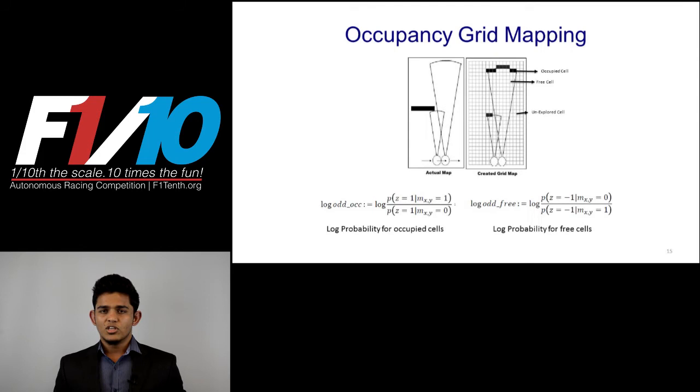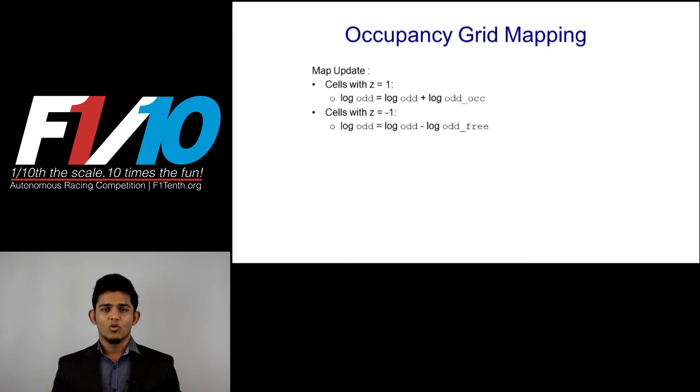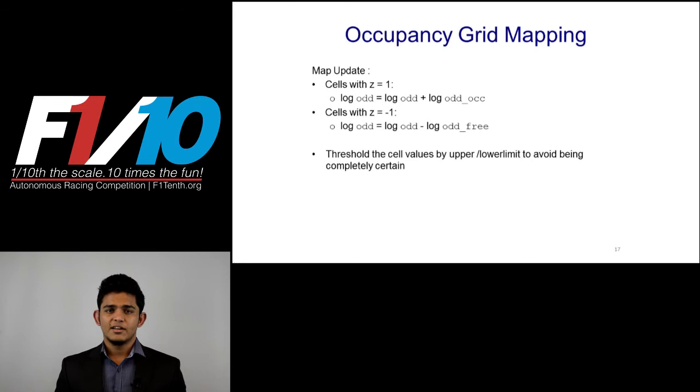To avoid this underflow, we deal with log probabilities. You can see two equations here. One corresponds to the log probability for occupied cells and the other one for free cells. During each timestamp, we update the robot pose and map this constants to particular map cells. This tells us the odds of a particular cell being occupied or free.